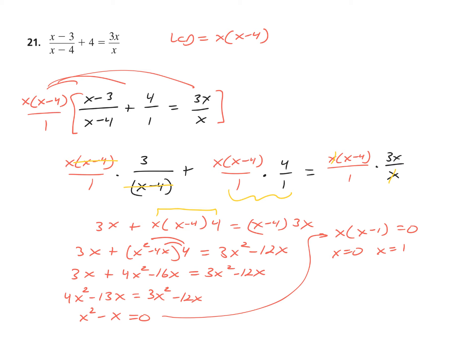Let's double-check. Do you see it? This denominator is an X, and you cannot have a zero denominator. So X equals 0 goes bye-bye, and X equals 1 is my only legitimate solution.